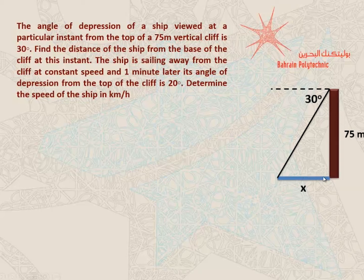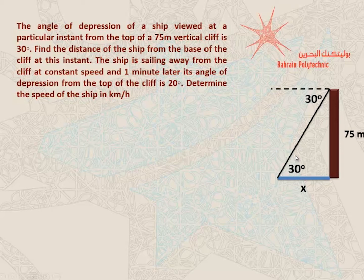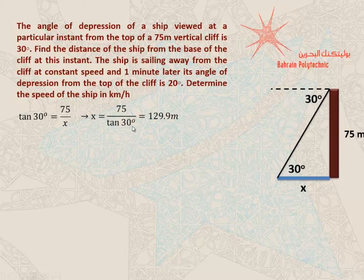This is the base of the cliff and this is the ship, so they want this horizontal distance. Since this angle of depression is 30 degrees, by alternate angles — they form a Z shape — the angle inside the right triangle at the base is also 30 degrees. I've got the angle, the opposite side is 75, and I need to find the adjacent x. This is the tan function: tan of 30 equals 75 over x. Cross multiplying gives x equals 75 over tan of 30, which equals 129.9 meters.